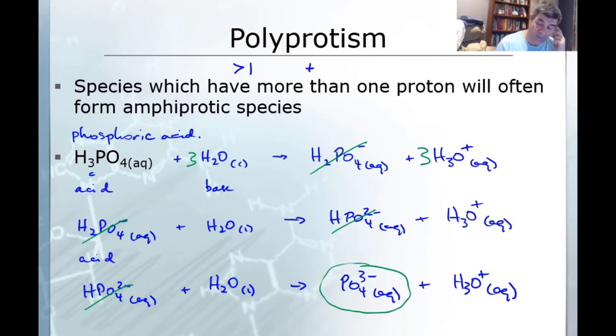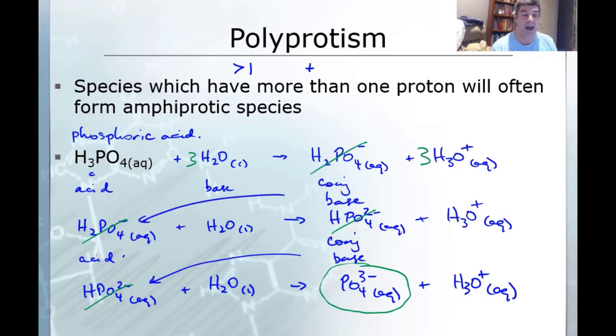But what you can see is with each of these, the corresponding species here is a conjugate base which also is then acting as an acid. Here's a conjugate base but also acting as an acid here. So these are our amphiprotic species and we can see them when we pull some of these different polyprotic species apart and go through their ionization sequences.